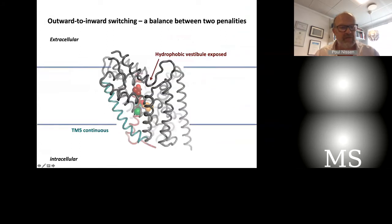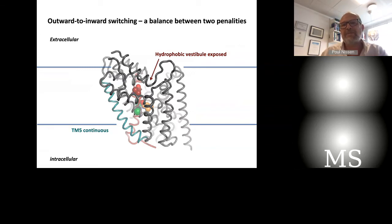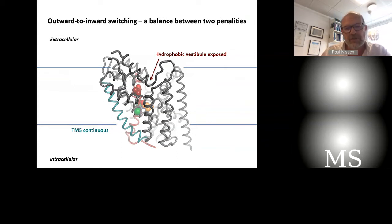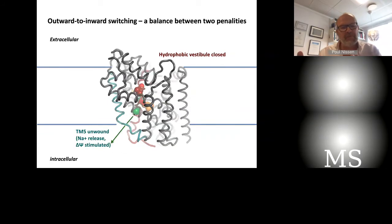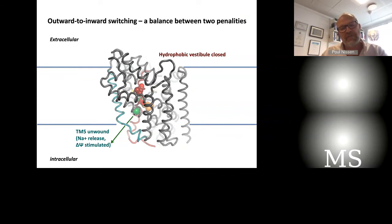This brought us to a first model of how the transporter could switch sides and start releasing on the intracellular side — what we've called a balance between two penalties. In the outward occluded state shown for LeuT, you have this exposure of a hydrophobic vestibule, which is an unfavorable situation. Once you close that, you get another small penalty — namely the deformation, the unwinding of the TM5 helix at this motif. So either you have one or the other, but we believe this is probably a dynamic interchange between the two states. Once you are in the inward-oriented state, there's the opportunity for sodium to be solvated and released, and the transport system will move on in the functional cycle.